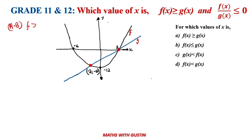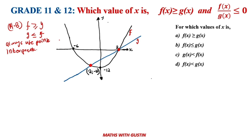If you are dealing with a situation where one graph is greater or equal to the other graph, or g(x) is less or equal to — in this case, always use the point of intercept between the two curves. So you are going to use the point where the two graphs meet each other, because they're asking you which graph is on top of the other one.